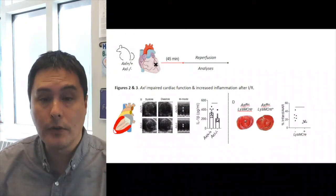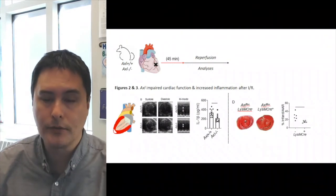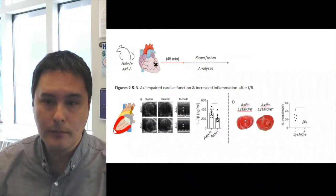Now to determine the causal significance of his findings, Matt went to the mouse model and subjected either wild type or AXL deficient mice to coronary artery occlusion, followed by reperfusion and his subsequent analyses.